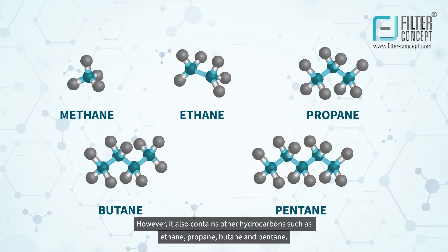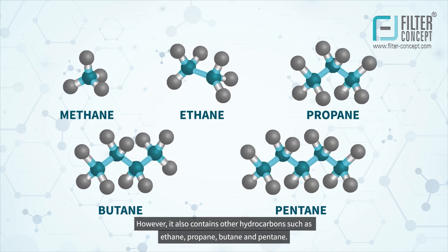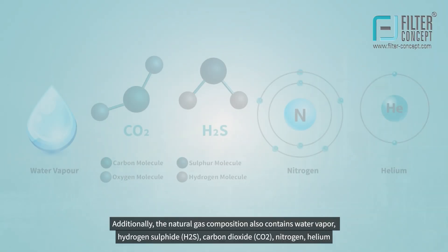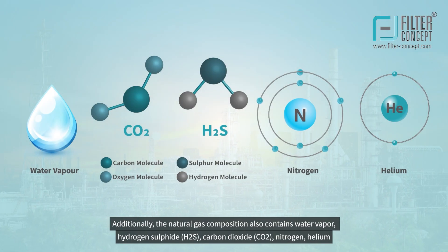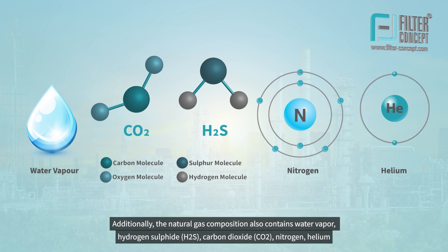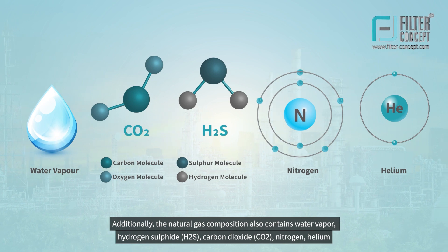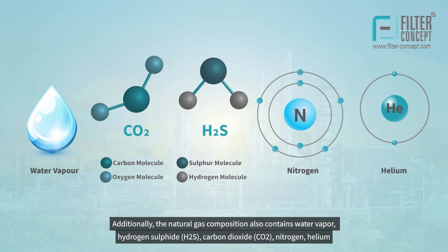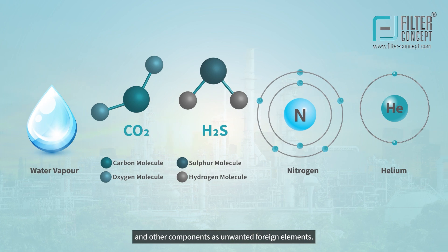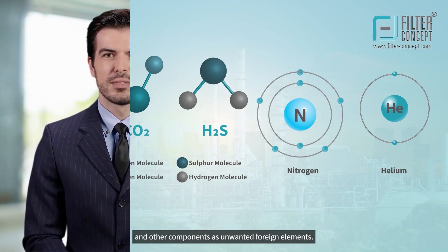However, it also contains other hydrocarbons, such as ethane, propane, butane, and pentane. Additionally, the natural gas composition also contains water vapor, hydrogen sulfide, carbon dioxide, nitrogen, helium, and other components as unwanted foreign elements.